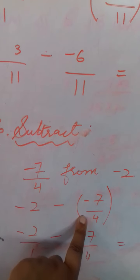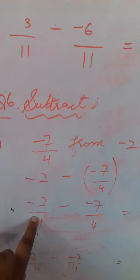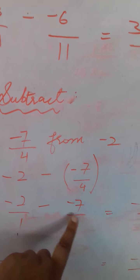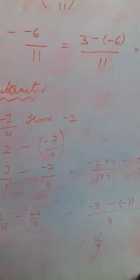Minus minus 7 upon 4. When nothing is here in the denominator, we will take it as 1. So, minus 2 upon 1 minus minus 7 upon 4. Now, take the LCM of 4 and 1. The LCM will come 4 again.